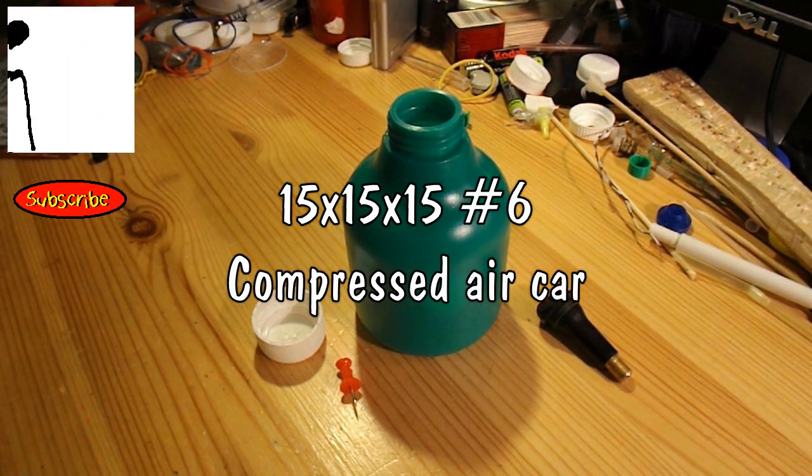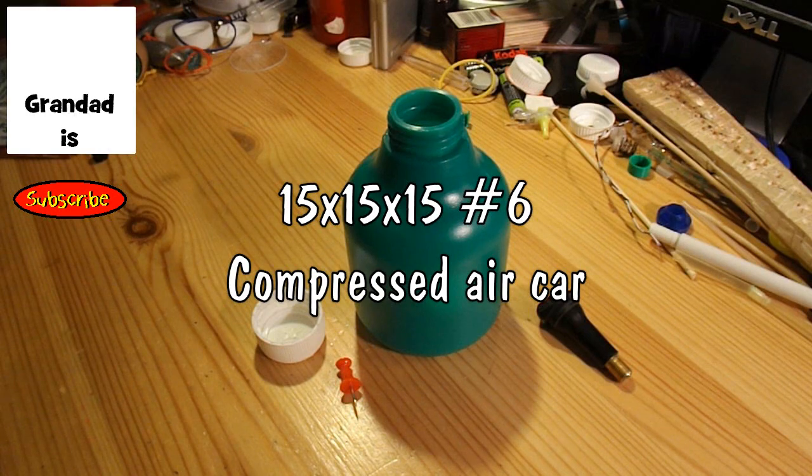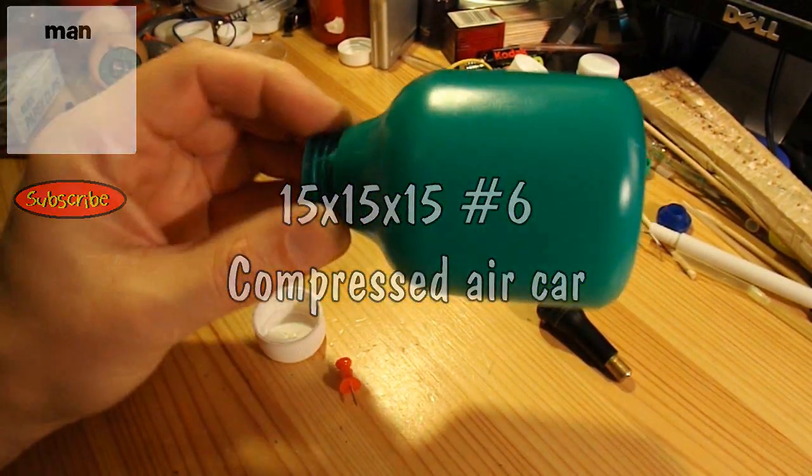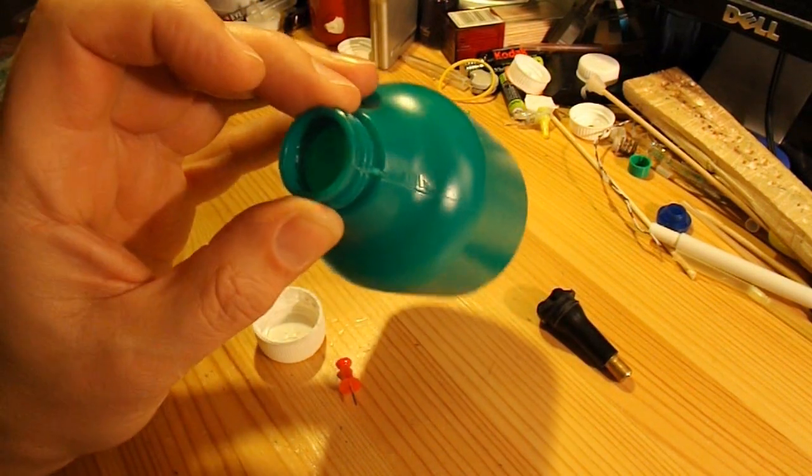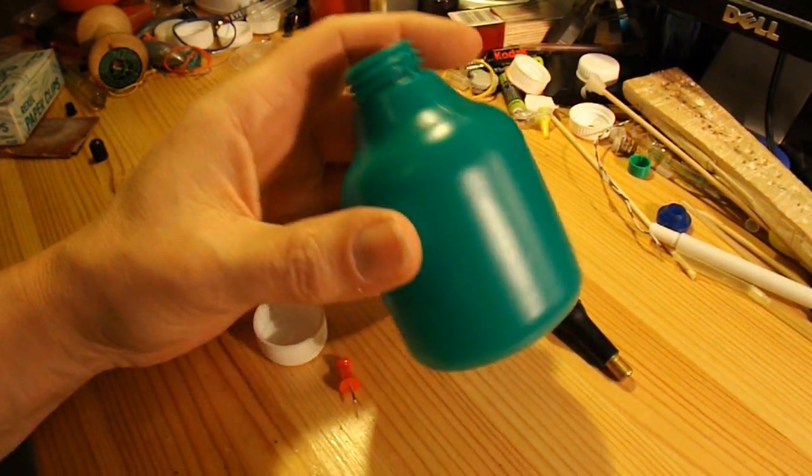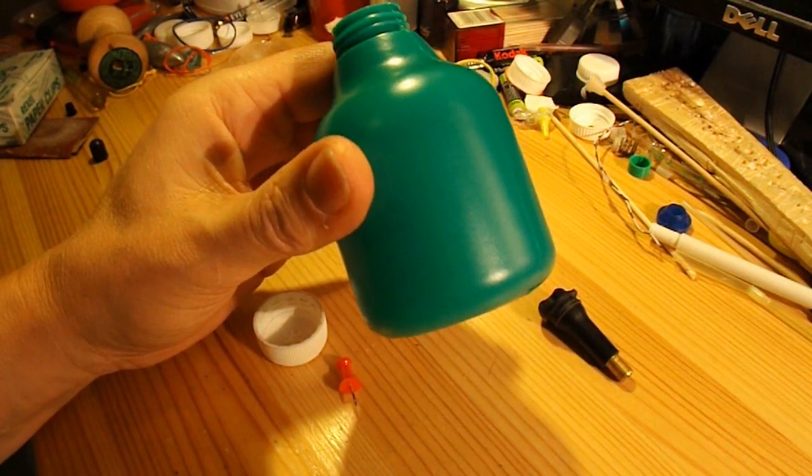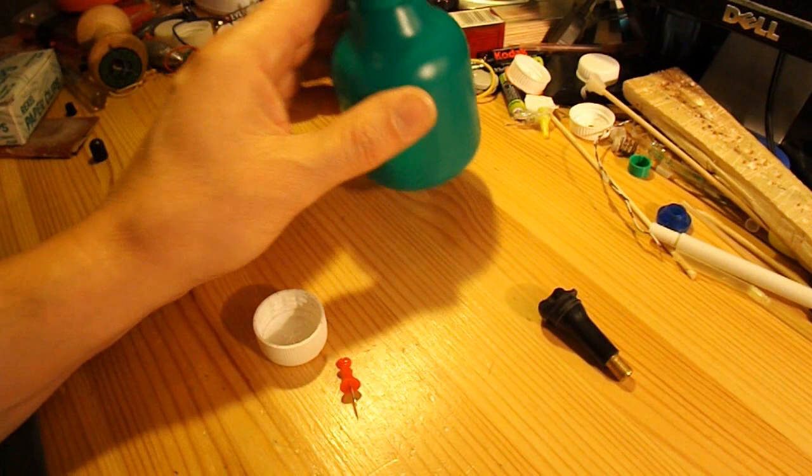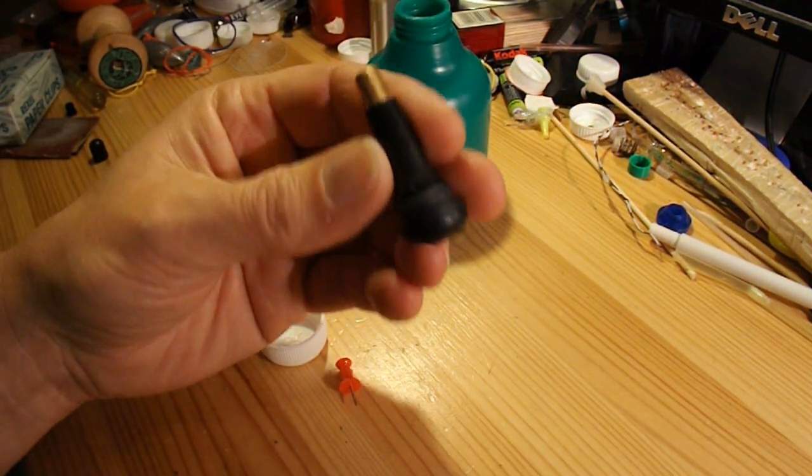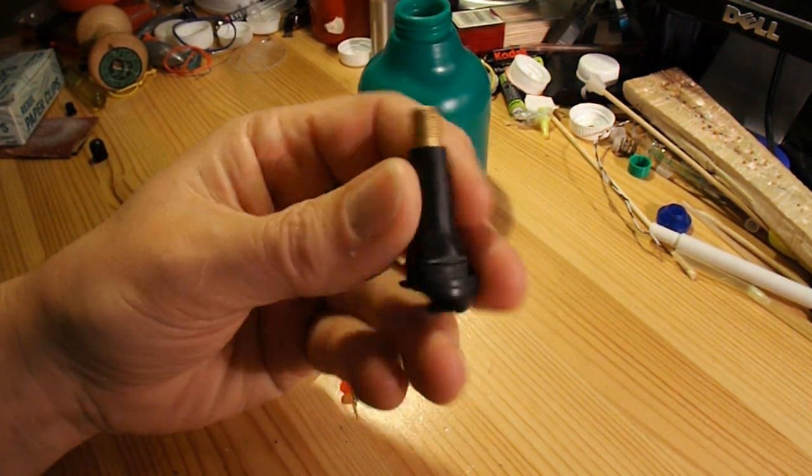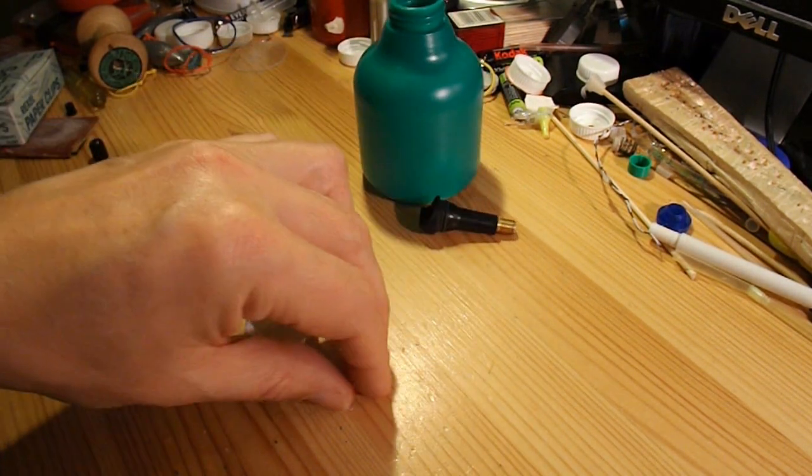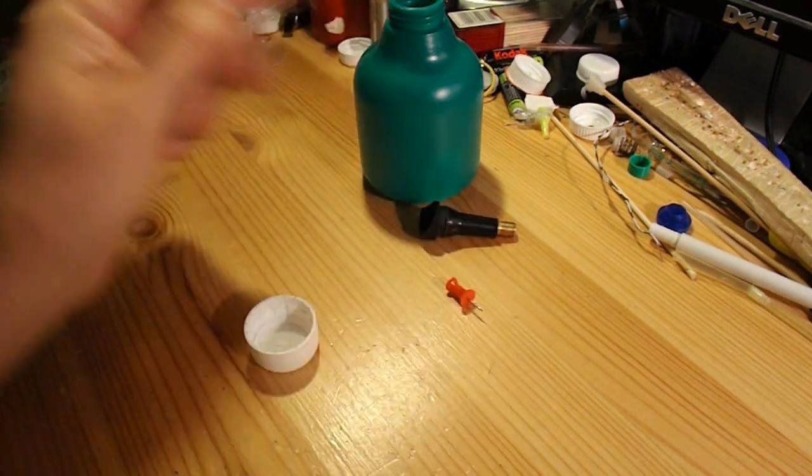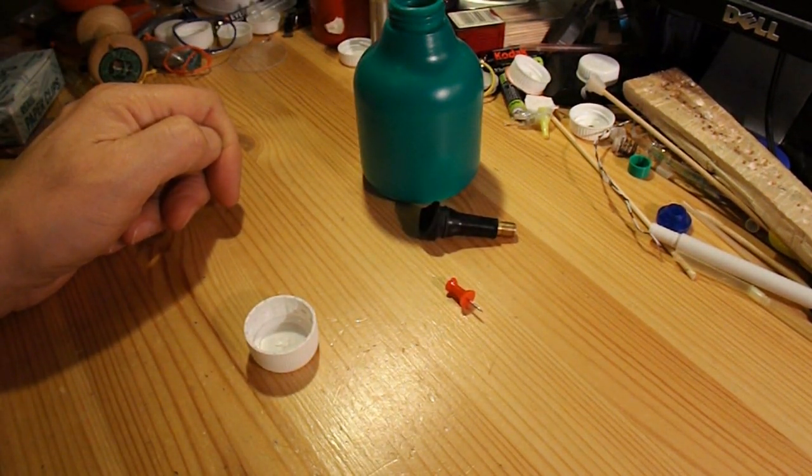Hi guys, in today's 15x15x15 project I'm going to use this plastic bottle that used to have a hand pump on top and used to spray water on house plants to keep them moist. And I'm going to use this car tire valve and this map pin to make an air powered car.